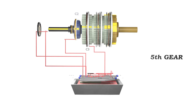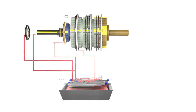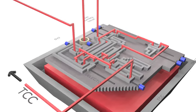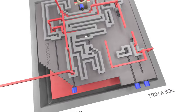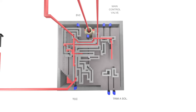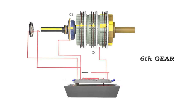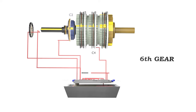For sixth gear we must engage C2 and C4. C3 will disengage and exhaust out trim A solenoid. To engage C4 the main line will pass through trim B solenoid, then shift valve 1, and then shift valve 2. C2 and C4 are now engaged — sixth gear.